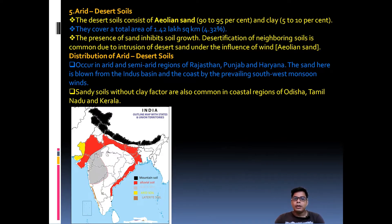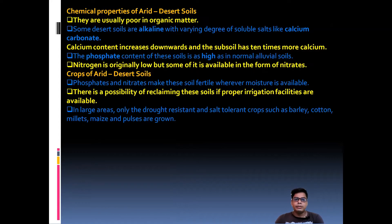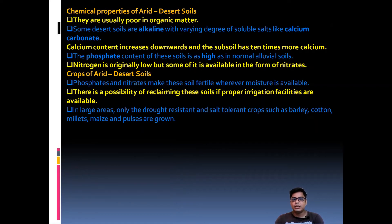Due to wind action, sandy soils without clay are also common in coastal regions of Odisha, Tamil Nadu, and Kerala. The chemical properties of desert soil: they are usually poor in organic matter due to lack of rainfall and sparse vegetation. Some desert soils are alkaline with varying degrees of soluble salts like calcium carbonate, which increases downward into the subsoil — up to ten times more than at the surface.